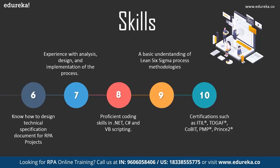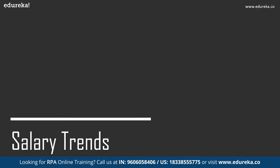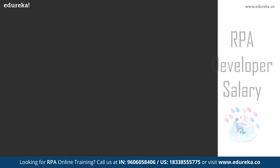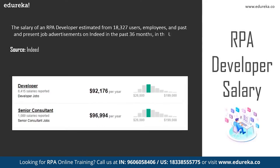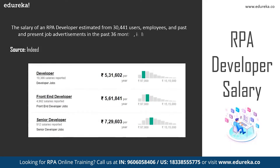According to Indeed.com, the average salary of an RPA developer estimated from around 18,000 employees and past and present job advertisements ranges from around $92,000 for a developer to $96,000 for a senior consultant. Similarly in India, according to Indeed.com, the developer salary is from around 5 lakh rupees to a senior developer salary of around 7.2 lakhs. According to Glassdoor, the average salary of an RPA developer in the United States is around $96,000 and in India around 7,62,000 rupees.